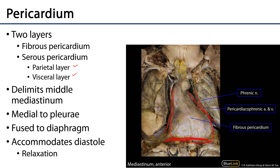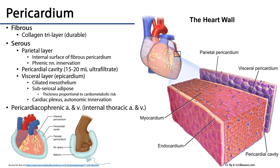The fibrous pericardium is a tough sac predominantly comprised of collagen, so it's not elastic at all. It allows the heart to expand during diastole but doesn't stretch. It's a collagenous tri-layer with each layer woven at about 120 degrees with respect to the other, providing a physical barrier to prevent disease spread and serving as an anchor for the heart within the mediastinal space.